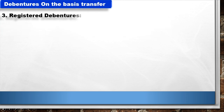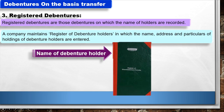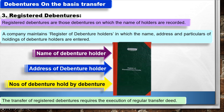Debentures on the basis of transfer. 3. Registered Debentures: These are debentures on which the names of holders are recorded. A company maintains a register of debenture holders in which the name, address, and particulars of holdings are entered. Transfer of registered debentures requires the execution of a regular transfer deed.